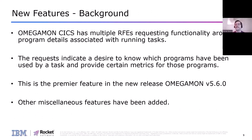Now let's talk about new features. Omegamon for CICS had multiple RFEs surrounding program details. People wanted to see more details about a particular task and what programs it physically ran - statistics like how many times the program was invoked, how much CPU it used, what the wait was associated with it. This is the premier feature released with Omegamon version 5.6.